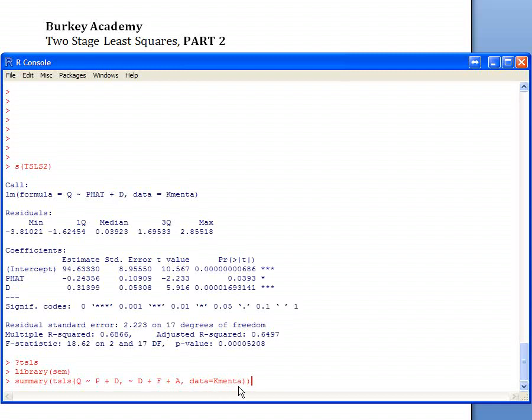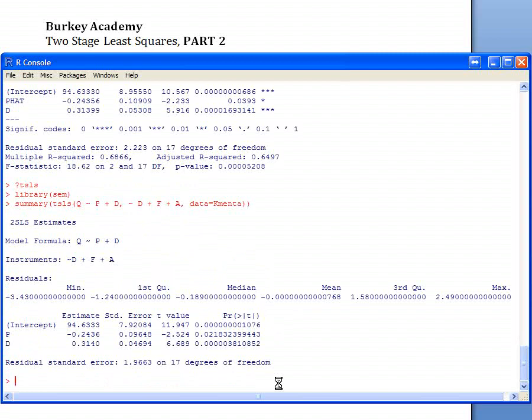That tells R where to look for these variables. You can assign this regression to a name and then do a summary, but the way they do it in the example here is to just go ahead and do the summary, so just hit enter.